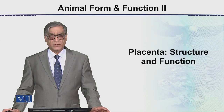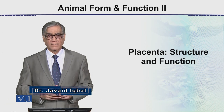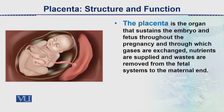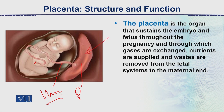Next topic is placenta, which is a very important structure because it is the connection between the mother and the growing child. We will see its structure and function. Placenta is the organ that sustains the embryo and fetus throughout pregnancy, and through which gases are exchanged, nutrients are supplied, and waste are removed from the fetal system to the maternal end. Placenta is a connection between the mother and the fetus.